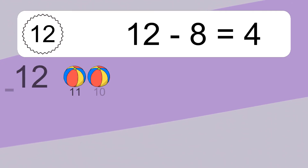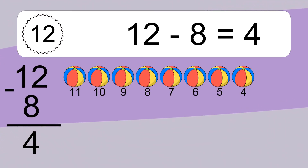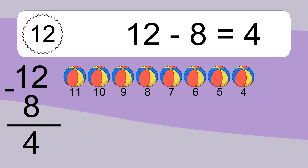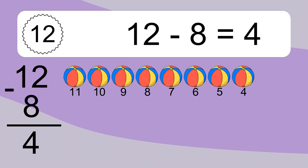12 minus 8 equals what? 12 minus 8 equals 4. Let's count it: 11, 10, 9, 8, 7, 6, 5, 4.